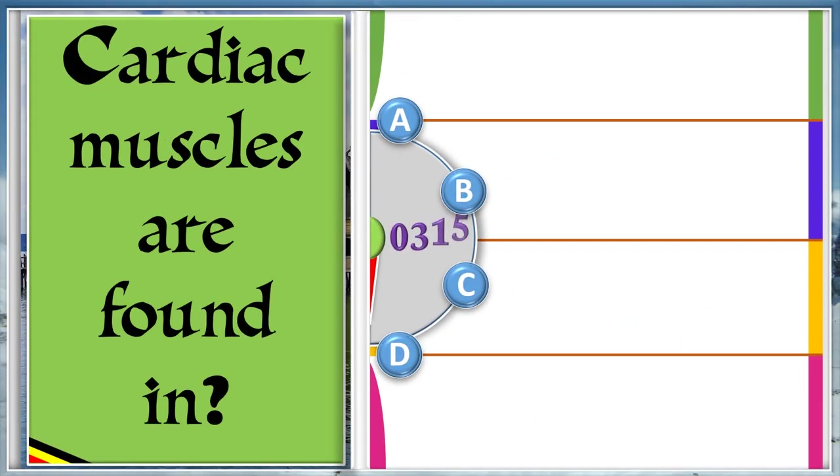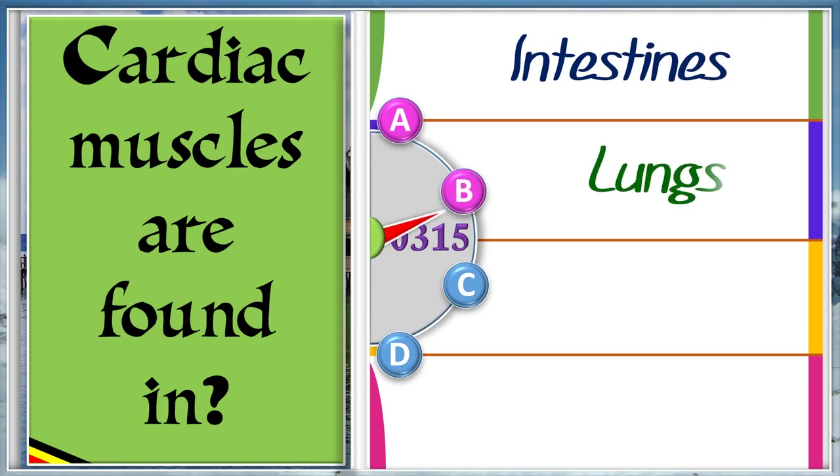Cardiac muscles are found in A: Intestines. B: Lungs. C: Heart. D: Aorta. And the answer is C, heart.